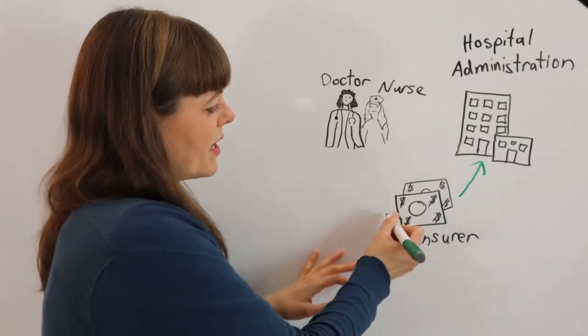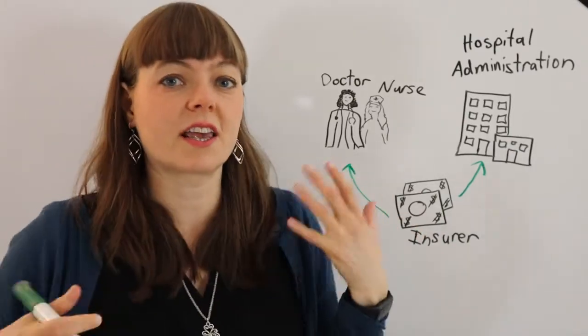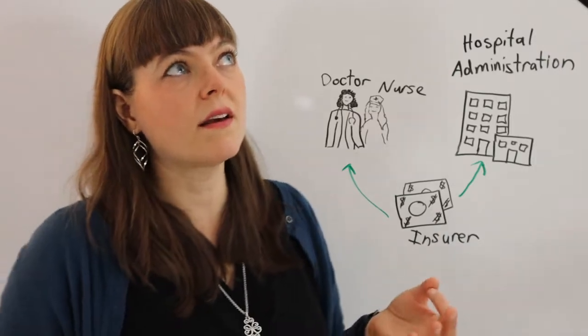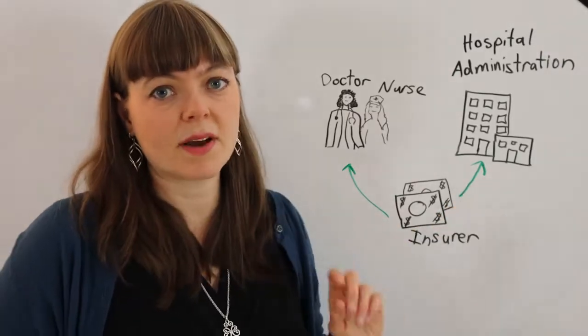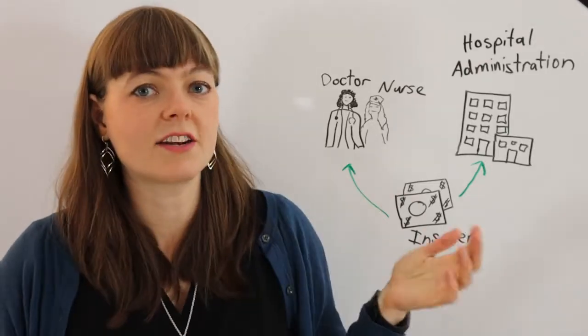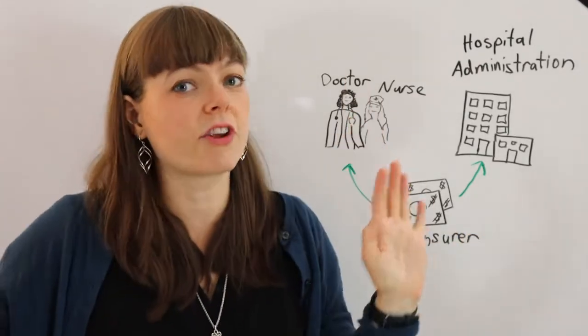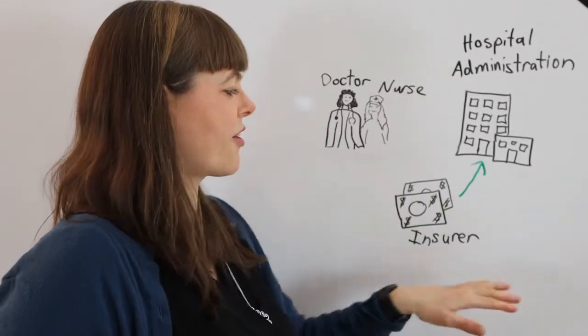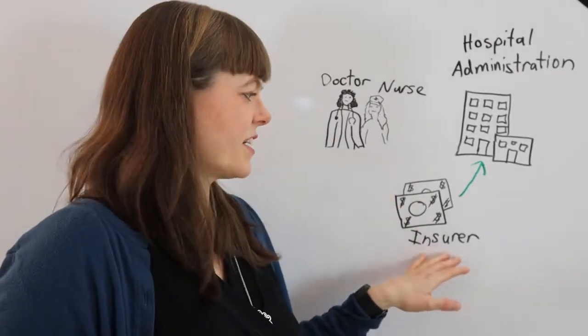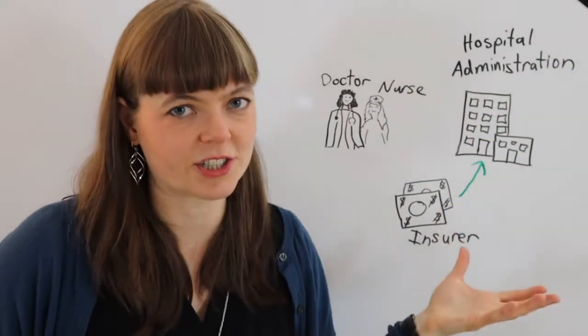Some of the money may go directly to the doctor. Like if you go to the hospital, one common setup is for insurers to pay the hospital some money and the doctor some money directly. That's not in every case, but it does happen. For this video, I'm mainly going to be focusing on the influence that insurers have through the hospital administration.